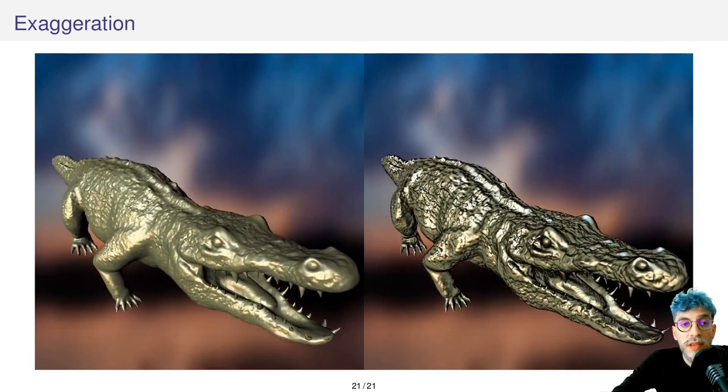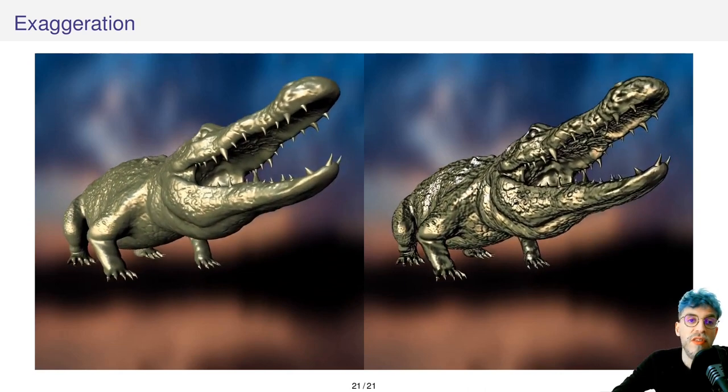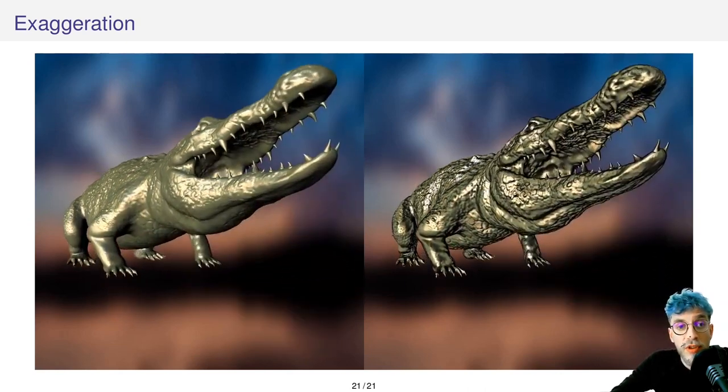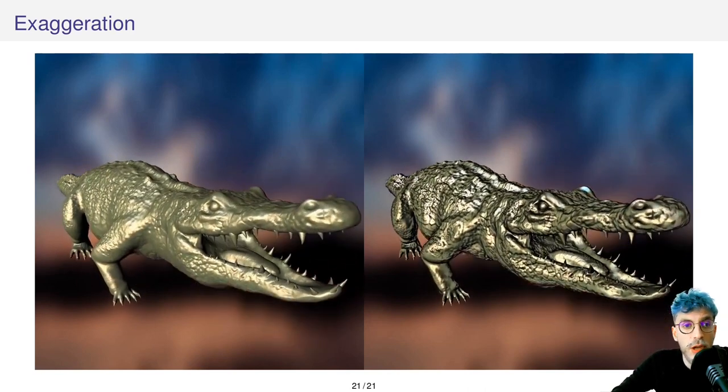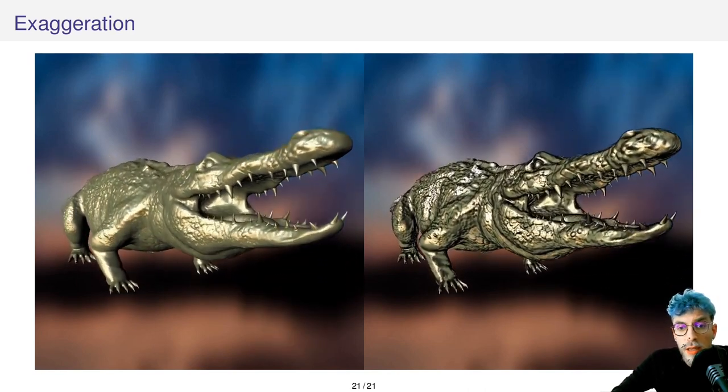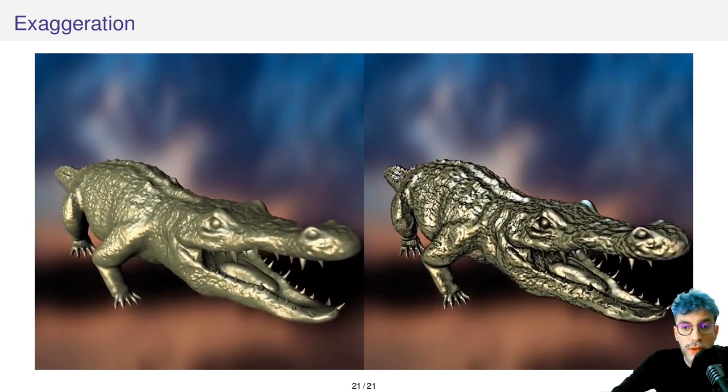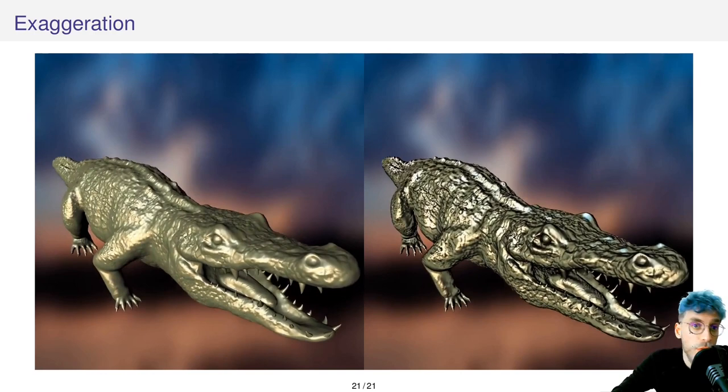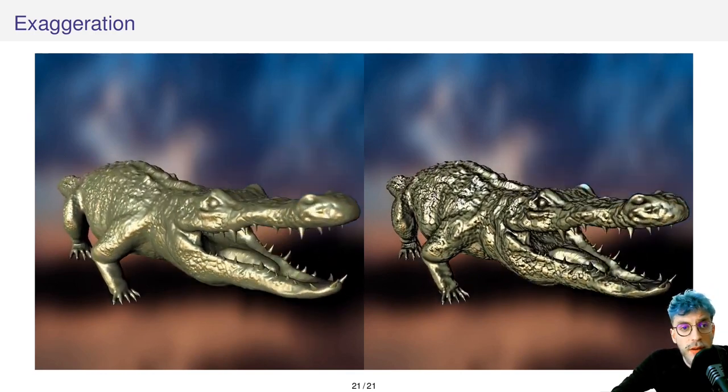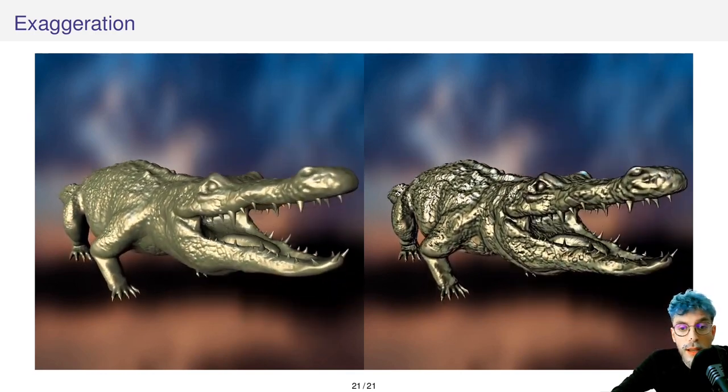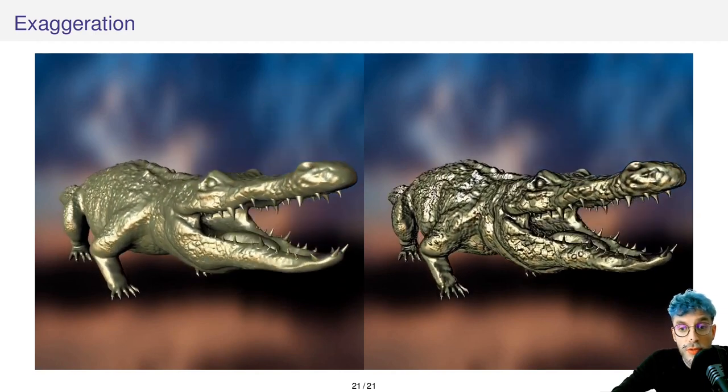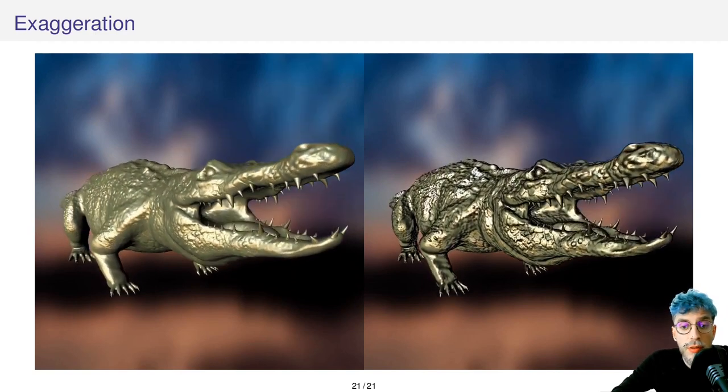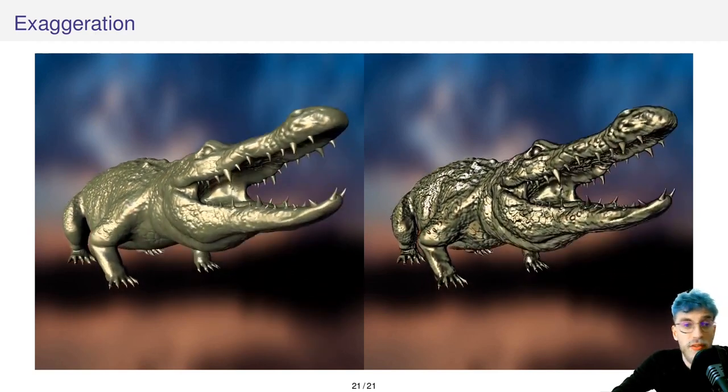We also would like to investigate the amount of exaggeration that is tolerated by the human visual system. Indeed, when pushing sigmas to high values, the exaggeration becomes really strong. It leads to interesting expressive results, as you can see on this crocodile here, giving a toon-like aspect to the renderings. But even though it can be the desired effect, exploring the range of sigma values that lead to plausible results proves to be interesting. It could then be used to guide an automatic enhancement process, for instance.